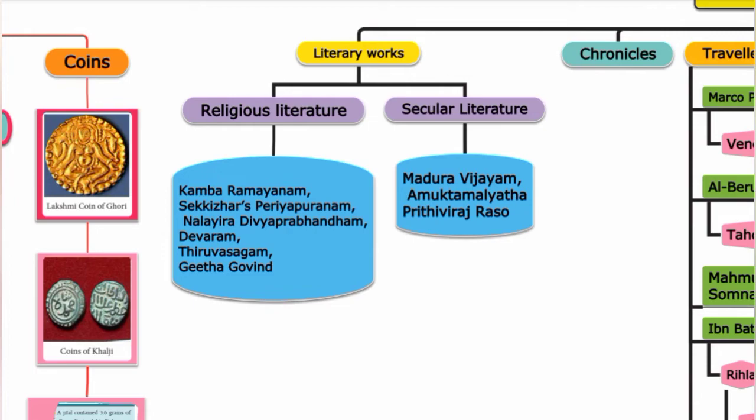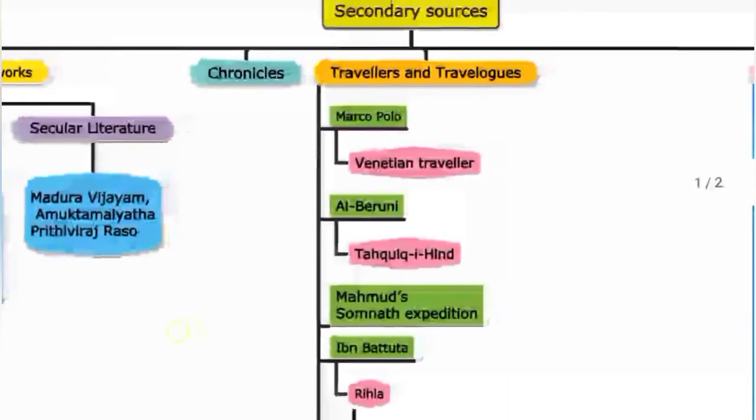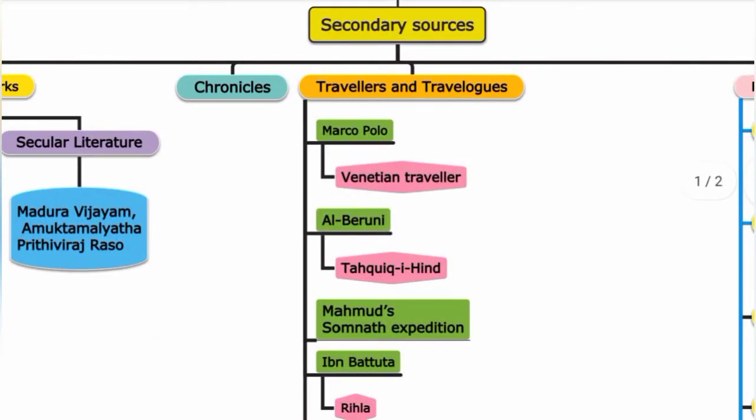Under literary works, we have religious literature and secular literature. Then we have chronicles. Travelers and travel logs record what travelers personally witnessed and experienced on their journeys.